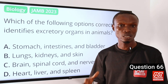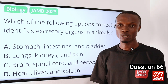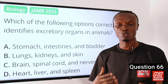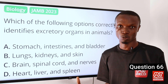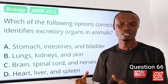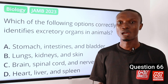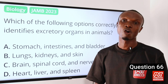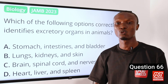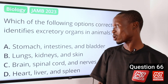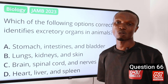The skin is primarily a protective organ but also participates in excretion. Sweating through sweat glands helps regulate body temperature and eliminate small amounts of metabolic waste such as urea and salt. So that makes option B the correct option.